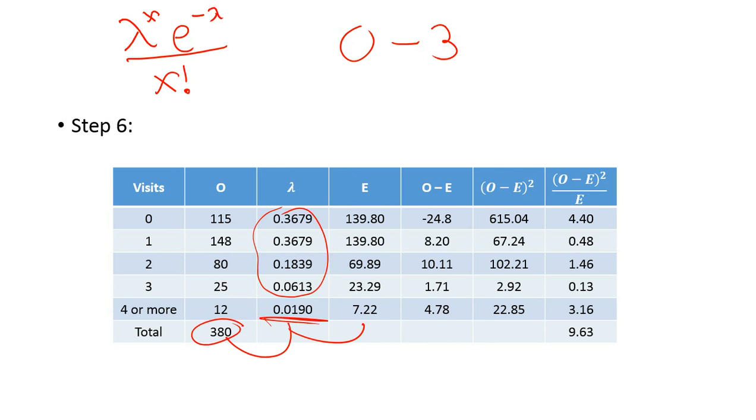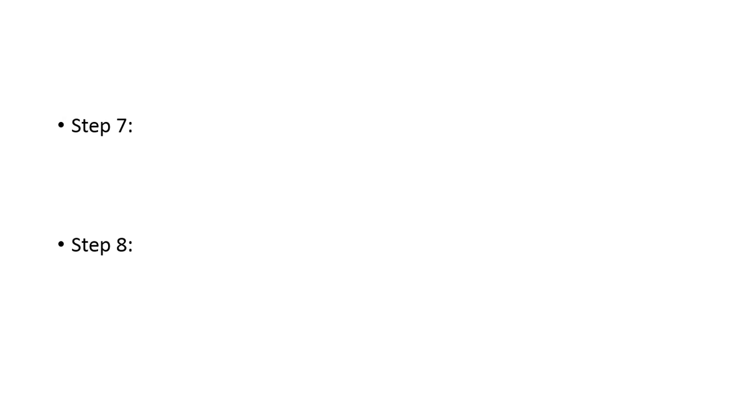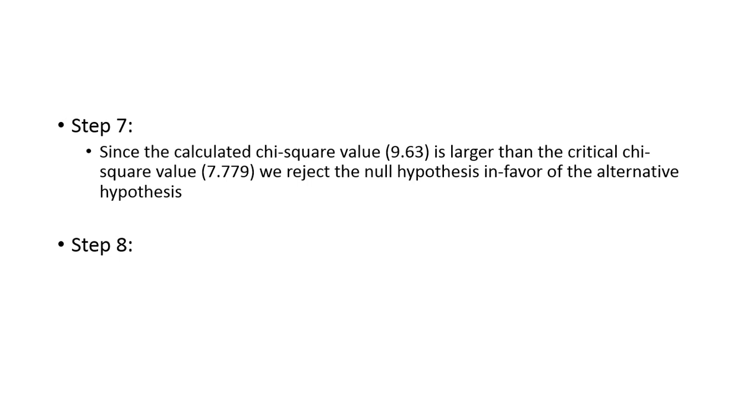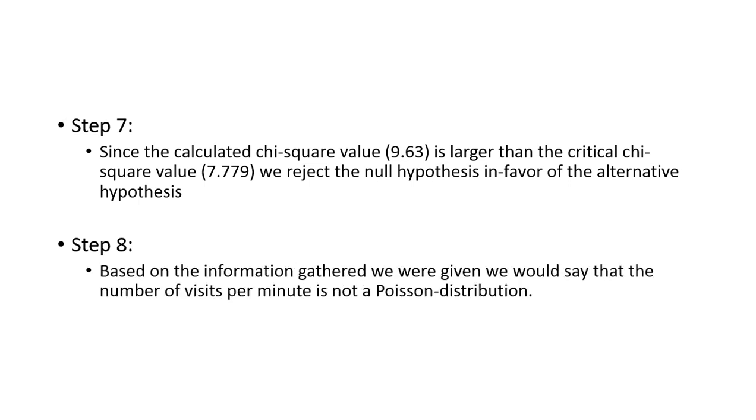Now we've got to see do we reject or fail to reject this distribution. Looking at this, if we go back to what our critical value was, that was 7.779. That means that we would end up rejecting this null hypothesis, because our critical value is less than our calculated. Our calculated 9.63 is larger than 7.779. So that means we reject the null hypothesis in favor of our alternative, which basically tells us that based on the information gathered, that data does not fit a Poisson distribution. A Poisson distribution is just another way of calculating the expected, depending on what we have.